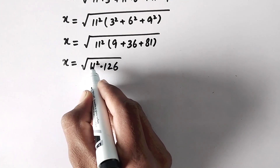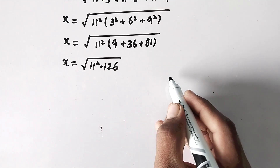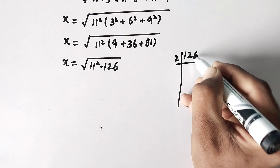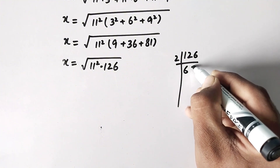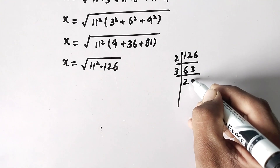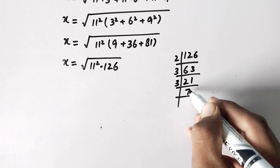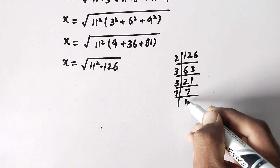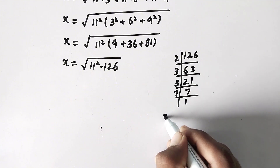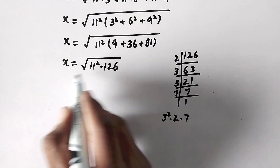We have an exponential value, so we will also express 126 in index form by factorizing it. 126 divided by 2 gives 63; 63 divided by 3 gives 21; 21 divided by 3 gives 7; and 7 is a prime number. So the prime factors of 126 are 2 × 3 squared × 7.